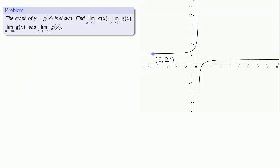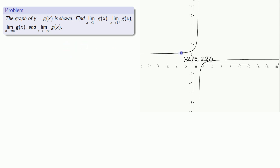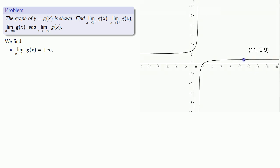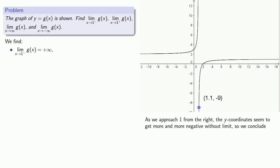Let's take a look at another situation. Again, we have another graph and we want to find a bunch of limits, this time including limits as x goes to infinity. The limit as x approaches 1 from below of g of x corresponds to what happens to our y values as x gets close to 1 from the left. As we approach 1 from the left, our y coordinates seem to get larger and larger without limit, so we might conclude that the limit as x approaches 1 from below of g of x is positive infinity. On the other hand, as we approach 1 from the right, our y coordinates seem to get more and more negative without limit, so the limit as x approaches 1 from above is negative infinity.